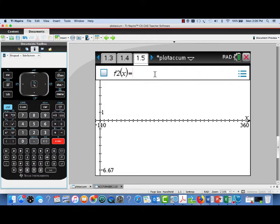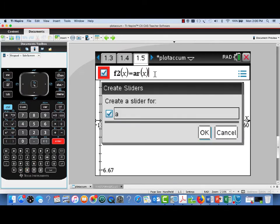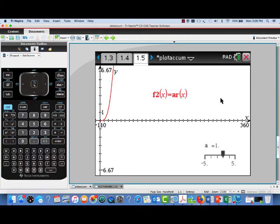So in F2, we'll enter our accumulation function, AR of X. And as soon as we've entered that, notice that what happens is we're prompted and asked if we'd like to create a slider for that lower limit of integration A. We'll accept the invitation. And now we see the slider's been set up.